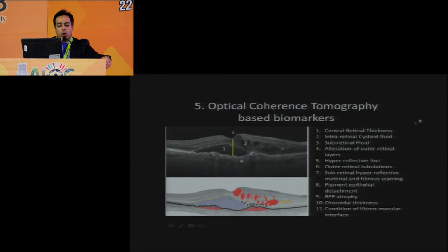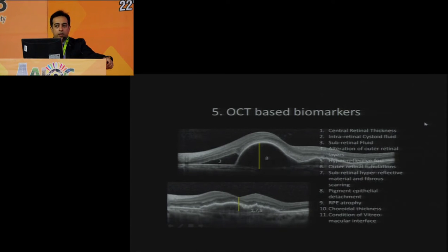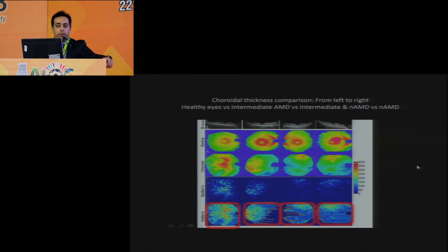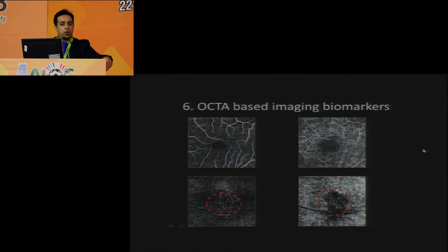OCT has many biomarkers studied over the years, including central retinal thickness, pigmentary epithelial detachment (PED), shifts, atrophic changes, and layer behavior used for predictive outcomes and recurrences. Pigment epithelium layer atrophy at certain places leads to progression. Choroidal thickness is also important — healthy eyes have a thicker choroid compared to pathologic AMD eyes.